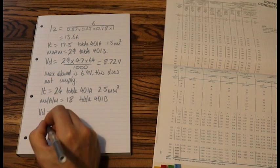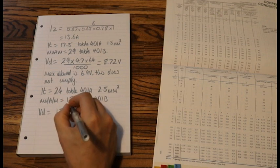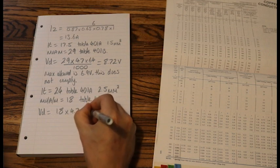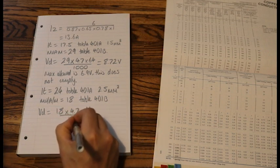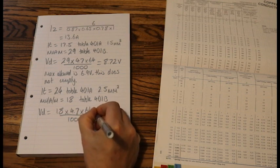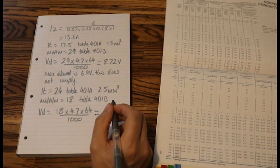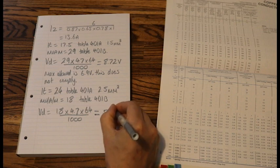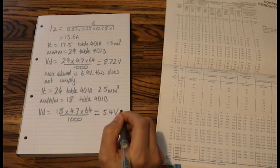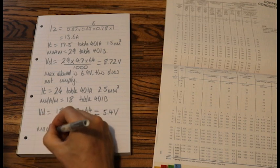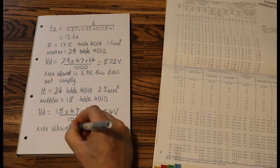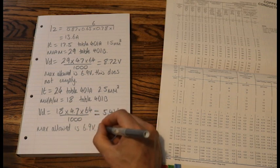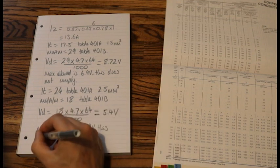And now we do our Voltdrop formula once again. So our Voltdrop formula now becomes 18 times my IB, 4.7, times my length, 64, divide 1000, and that should equal 5.4 volts. Brilliant. Now we can write, max allowed is 6.9 volts. This complies.